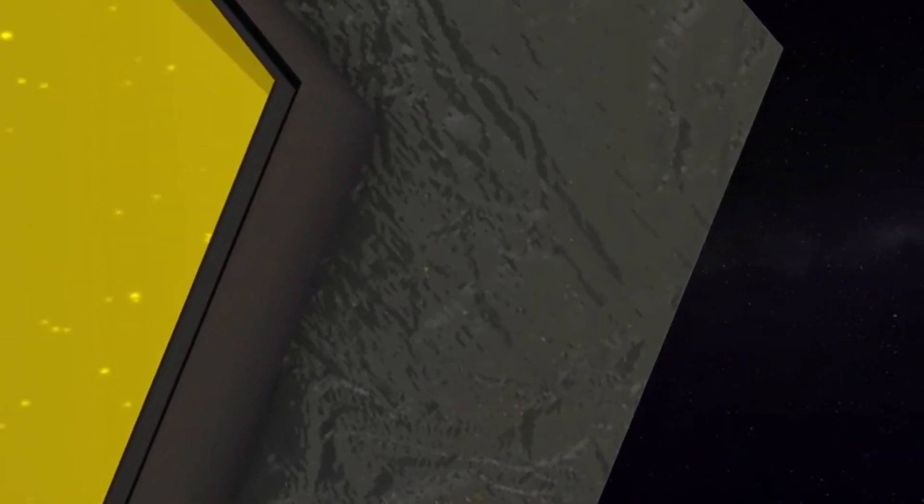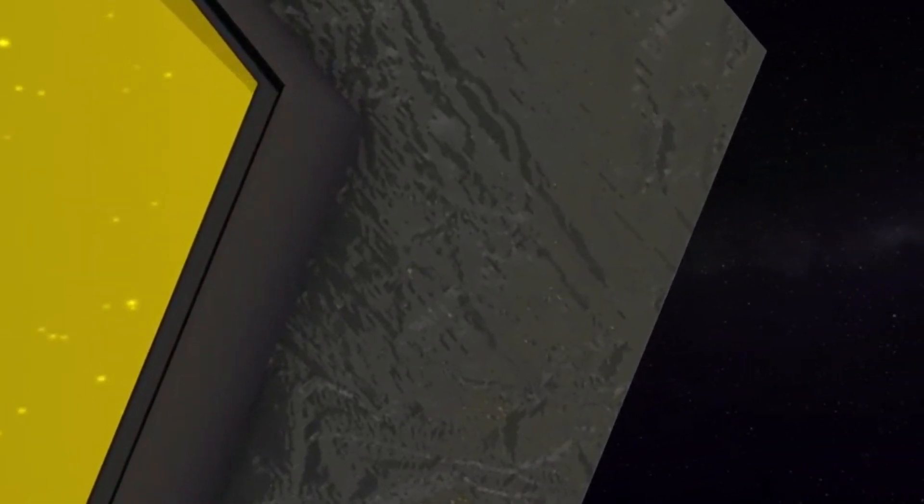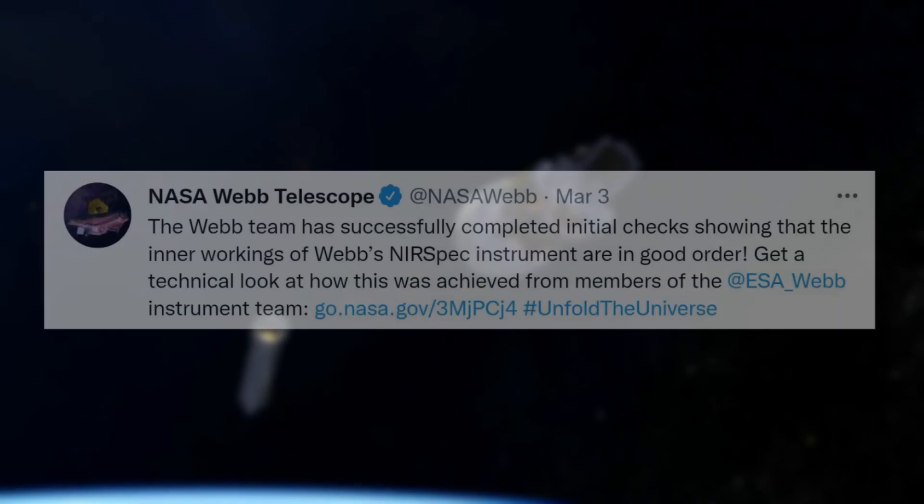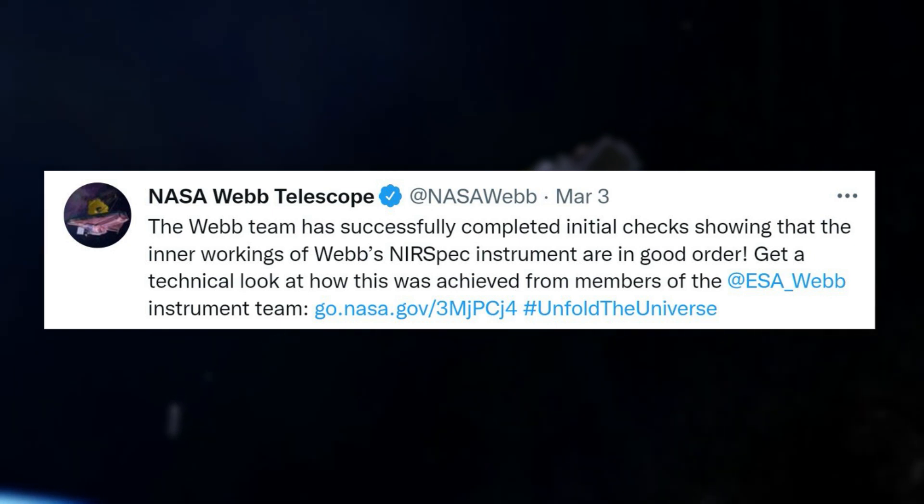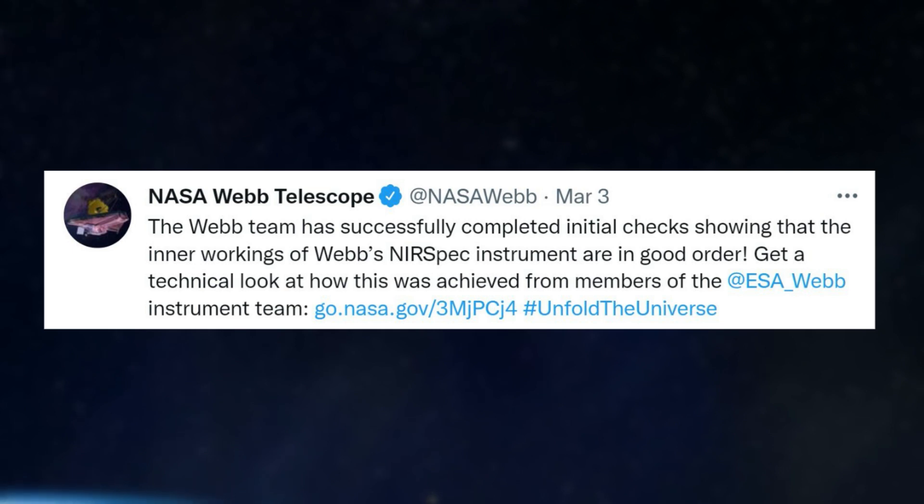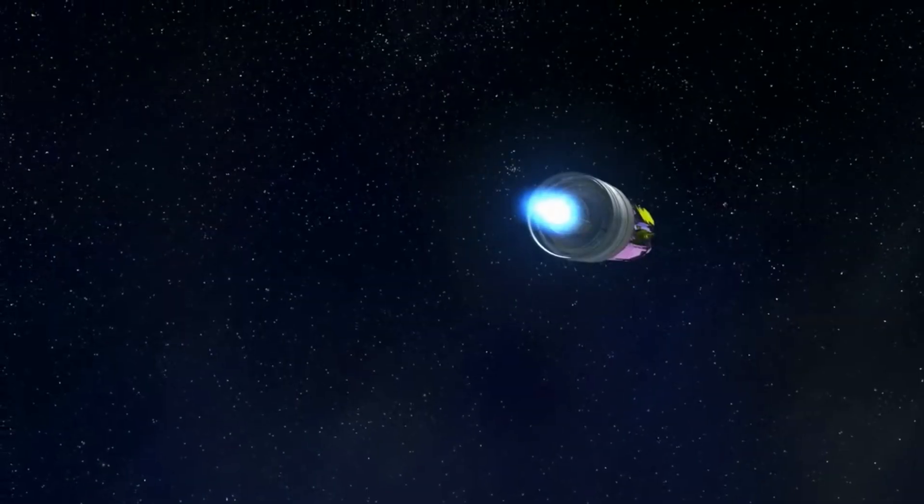Not long after, and only a few days ago NASA provided another valuable update regarding the JWST. In this tweet, NASA mentioned the Webb team has successfully completed initial checks showing that the inner workings of Webb's NIRSpec instrument are in good order. Get a technical look at how this was achieved from members of the NASA Webb instrument team. To put it in perspective,